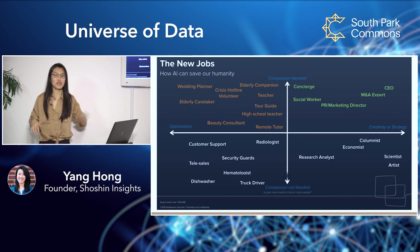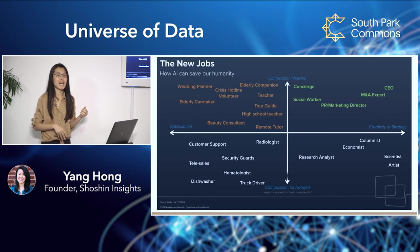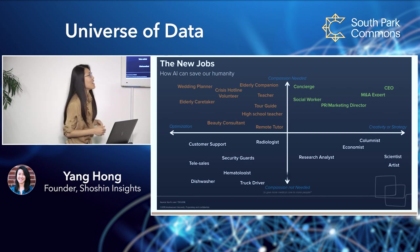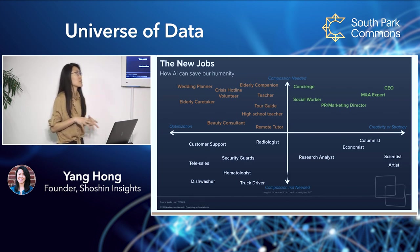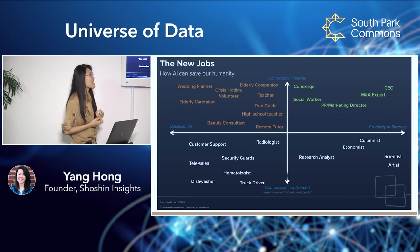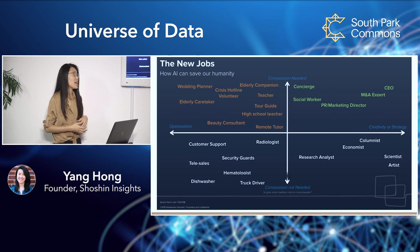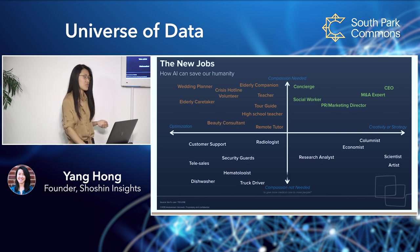This is something Andreessen Horowitz put together — a good way to think about whether you'll be automated out or not. The takeaway: the more you're leveraging what humans are really good at and machines are really bad at, the less of an existential crisis you'll have in the future. If you're in roles that require a lot of creativity, strategy, and compassion — where people care about the human touch — you'll probably not be automated as early as those in roles with clear optimization frameworks, codifiable objectives, and no need to interact with people.